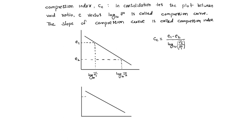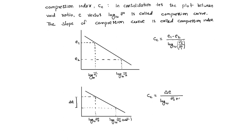Suppose this is log sigma 0, the initial pressure, and due to incremental stress delta sigma bar, the final stress is sigma 0 plus delta sigma bar. This change in void ratio, so this gap is delta E. Then cc equals the change in void ratio delta E divided by log of final stress (sigma 0 plus delta sigma bar) whole divided by sigma 0 bar. So this is the compression index.